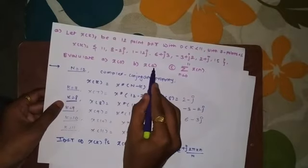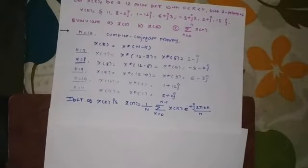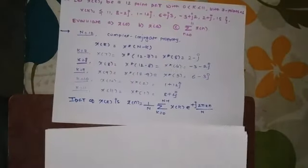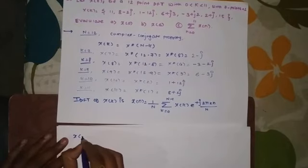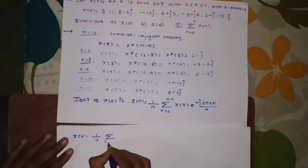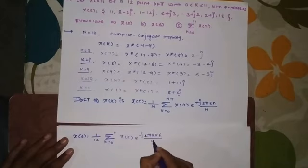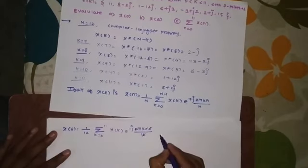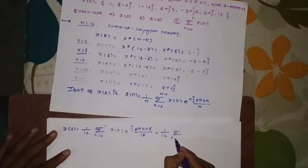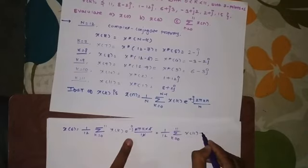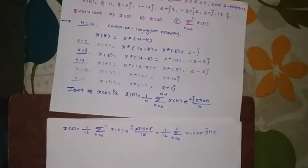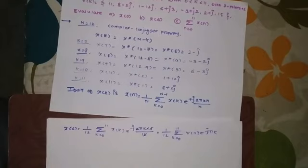Now we find the second value, x(6). We put N equal to 6 in the IDFT equation. X6 equals 1 by 12, summation from 0 to 11, of X of K times e raised to plus J 2 pi K times 6 divided by 12. The factor 6 times 2 divided by 12 cancels, leaving 1 by 12 times summation of X of K times e raised to minus J pi K.